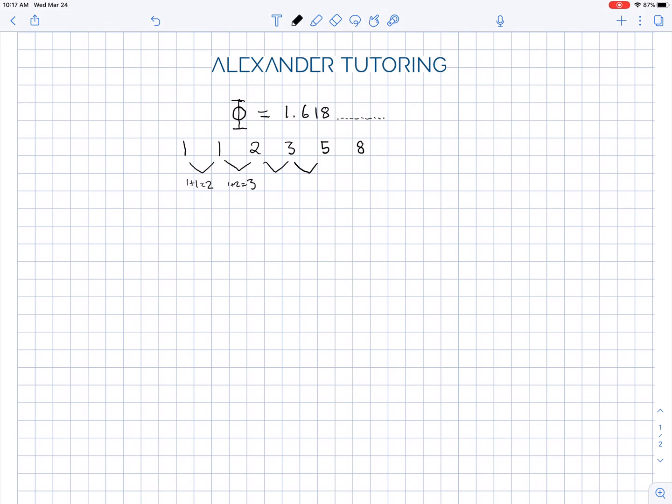So we go 8, 8 plus 5 is 13, 13 plus 8 is 21, etc. This can go forever. Now, where does that number phi, the 1.618, come from?